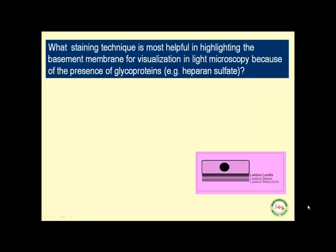What staining technique is most helpful in highlighting basement membrane for visualization in light microscopy, because of the presence of glycoproteins such as heparan sulfate in the basement membrane? Notice the change in coloration theme provided here — you will see a reddish pinkish hue of the tissues. The answer is PAS, or periodic acid-Schiff staining. This staining is very important in highlighting tissues with lots of carbohydrates; glycoproteins are sugary structures.